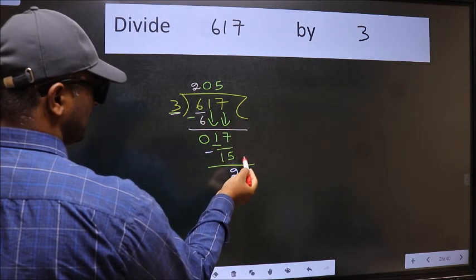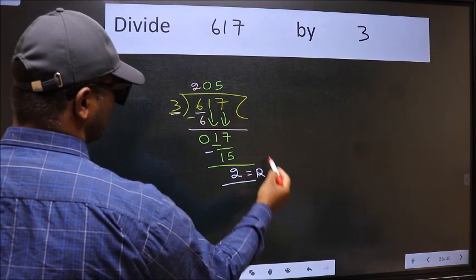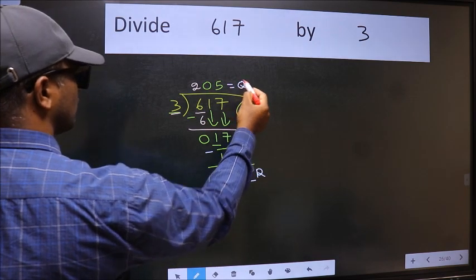No more numbers to bring it down. So we stop here. This is our remainder and this is our quotient.